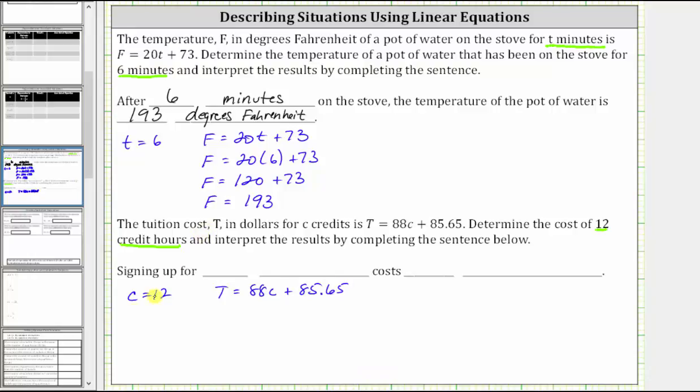And therefore, to determine the tuition cost of 12 credits, we now substitute 12 for C, which gives us T equals 88 times 12 plus 85.65.